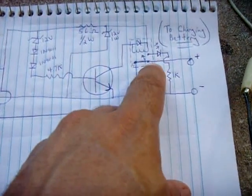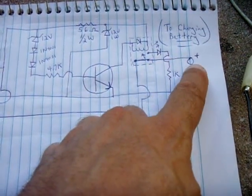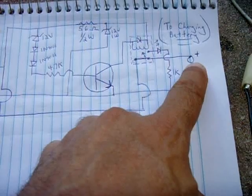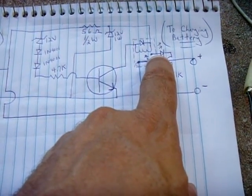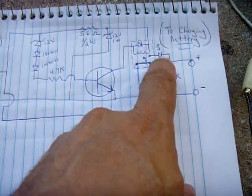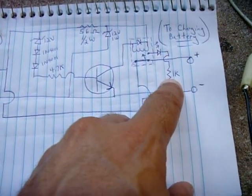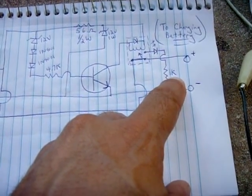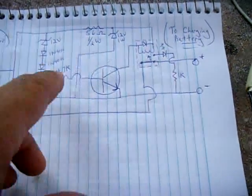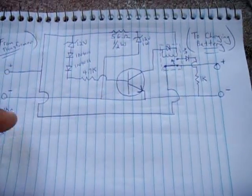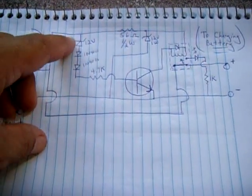When there's no current applied to the relay, the common terminal will be connected to the normally closed, so power will be going to your battery to be charged. The normally open terminal will have an LED, a green one with a current limiting resistor, and this would indicate a fully charged battery. Now in this case I have it set for 14.2 volts. You can make it whatever you want by adjusting the zener value.